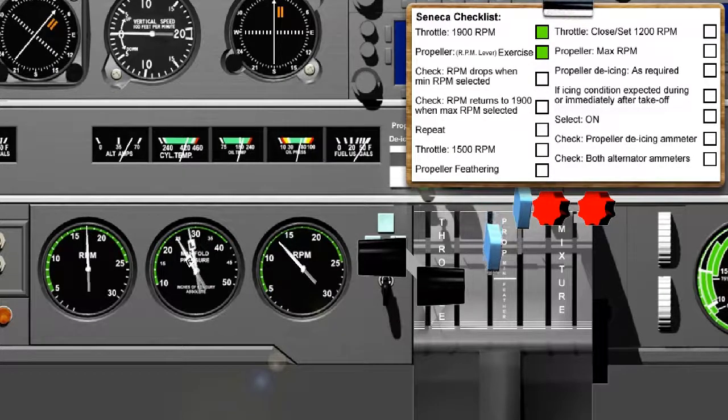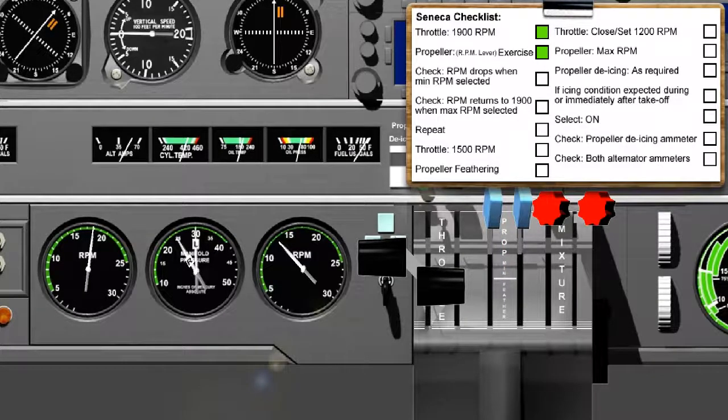Propeller, RPM lever, exercise. This part of the check ensures that the propeller functions correctly under the impetus of the oil pressure being fed to the pitch control mechanism. Check RPM drops when minimum RPM selected.